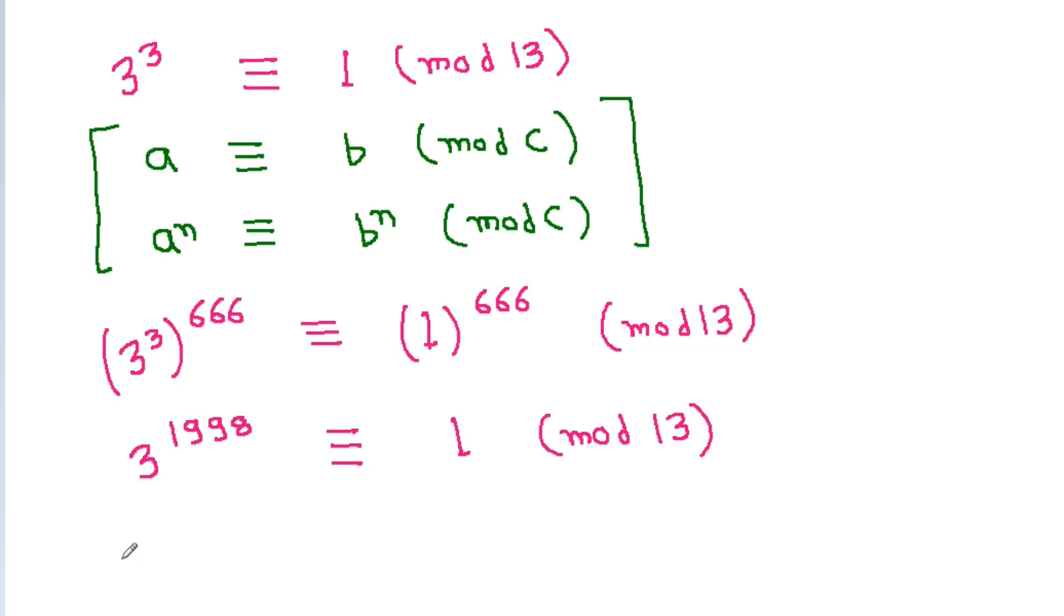And if A is equivalent to B mod C, then A times M is equivalent to B times M mod C.